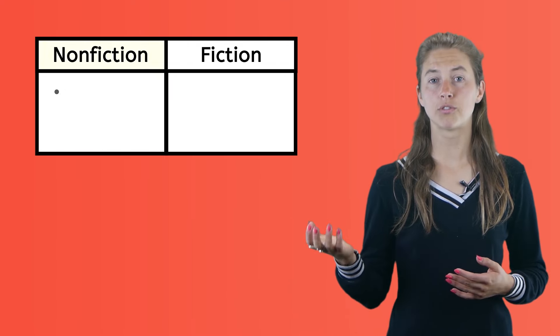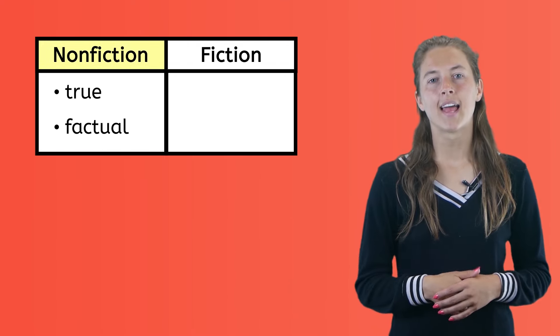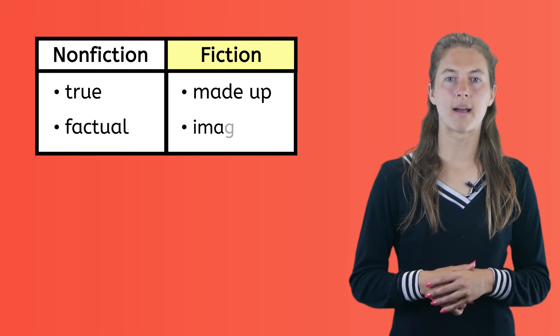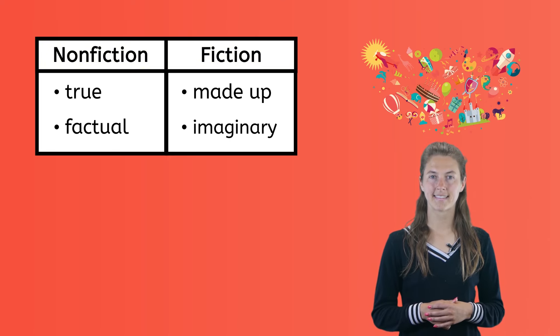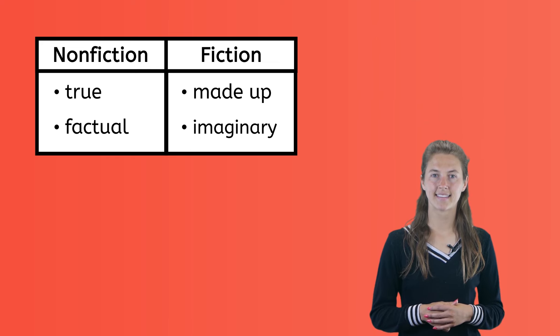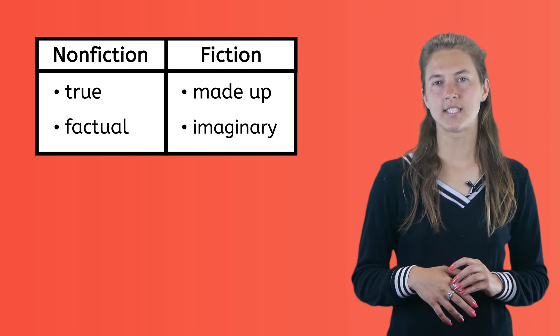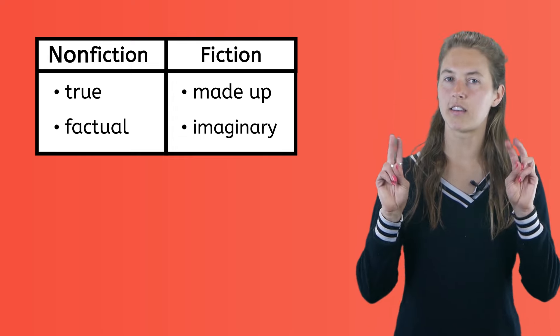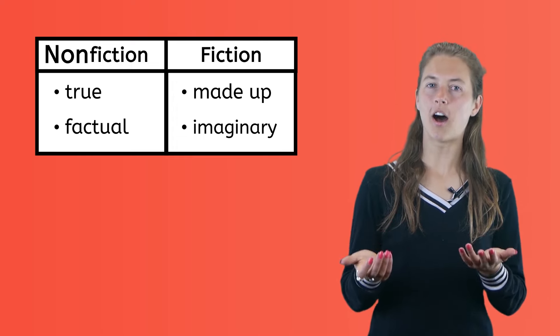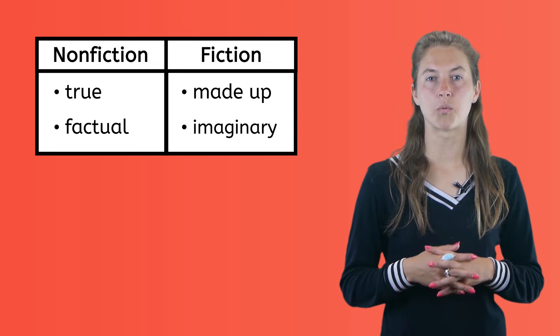You may already know that the things you read can be grouped into two main categories: things that are true or factual, and things that are made up in someone's imagination.